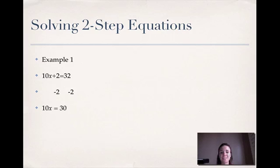As a reminder, that 10 and that x are multiplying. I undo multiplication with division, so I divide both sides by 10. When I do that, my 10s on the left cancel, so I'm left with x equals 3, 3 from 30 divided by 10.